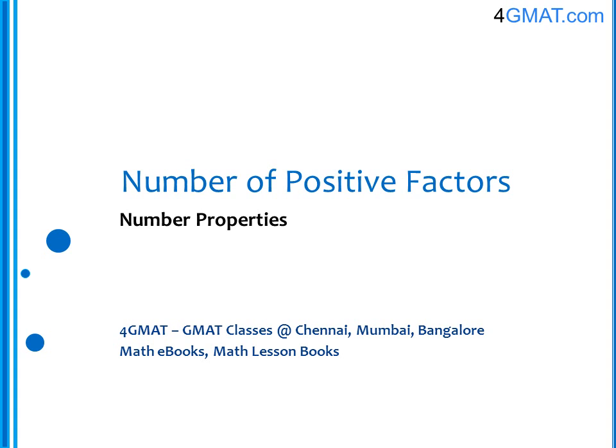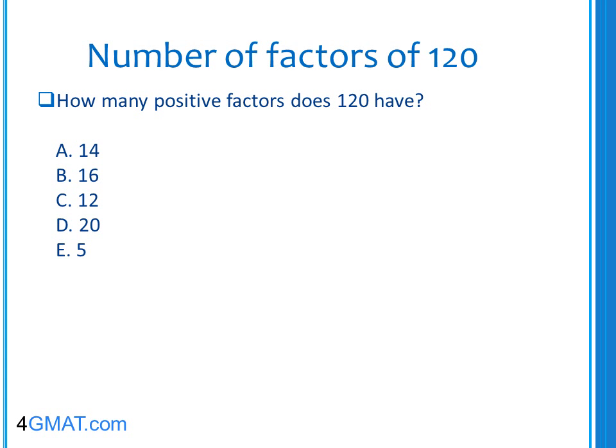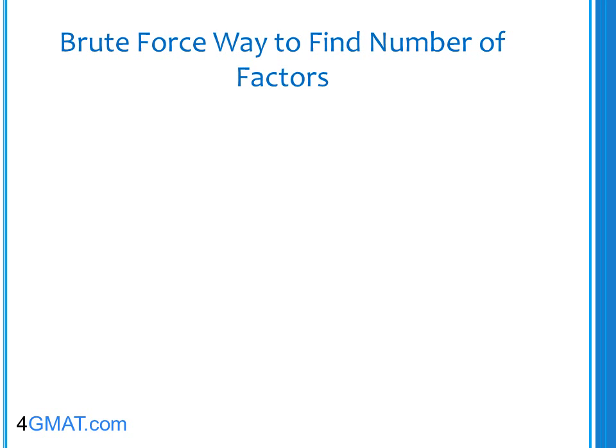This is a number properties question about finding out the number of positive factors that a number has. Let's start with an example: finding out the number of positive factors of 120. There are five answer choices given to us, and we can find out the answer to this question in three ways.